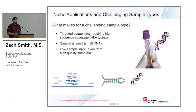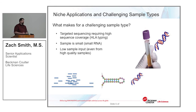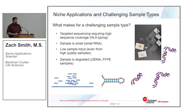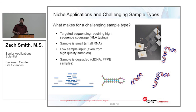We also have low input samples, even from high quality starting material. A lot of people are interested in circulating free DNA, single cell assays, and are always driving down the absolute minimum input required to do a good DNA-seq library. David will be talking about Rubicon's Thruplex for that application. And then there are degraded samples — circulating free DNA is approximately 160 bases. Anything involving FFPE is tricky because the DNA is fragmented, has damage, and it can be quite difficult to get good quality returns.